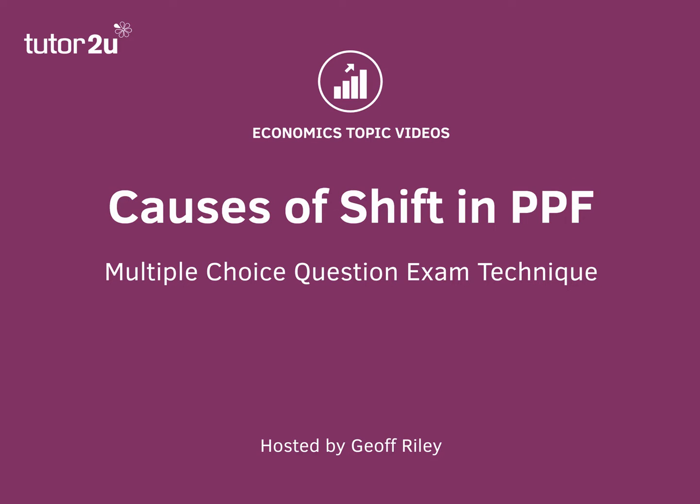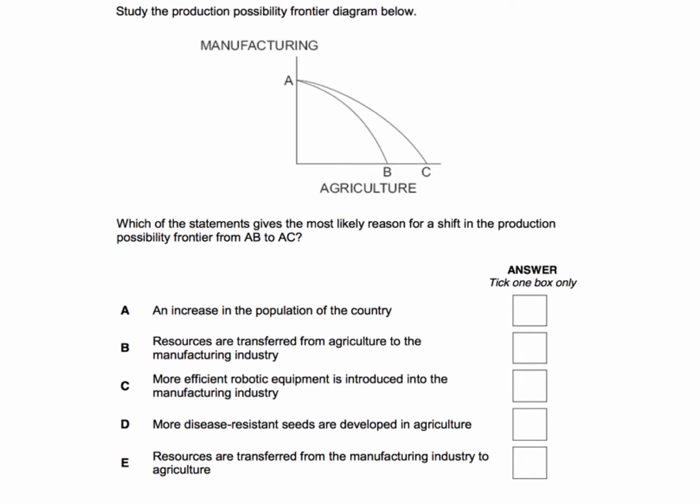Hi there, let's look at the multiple choice question and the technique of answering it. This one is going to be looking at the causes of a shift in the production possibility frontier.